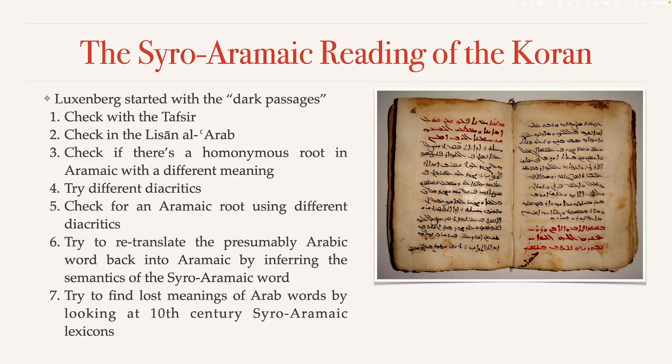Christoph Luxenberg started with the so-called dark passages — passages which are obscure and difficult, if not impossible, to understand or interpret. He developed a seven-step approach. Step one is to check with the tafsir, the commentary on the Quran itself, particularly with Al-Tabari, who is generally regarded to be the most important commentator on the Quran.